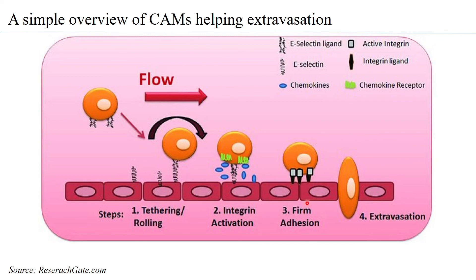Through ICAMs and VCAMs, the leukocyte slowly enters through the endothelial layer into the tissue — this is called extravasation or diapedesis. At every level, selectins, chemokines, integrins, and the CD44 family all contribute to the process of extravasation.